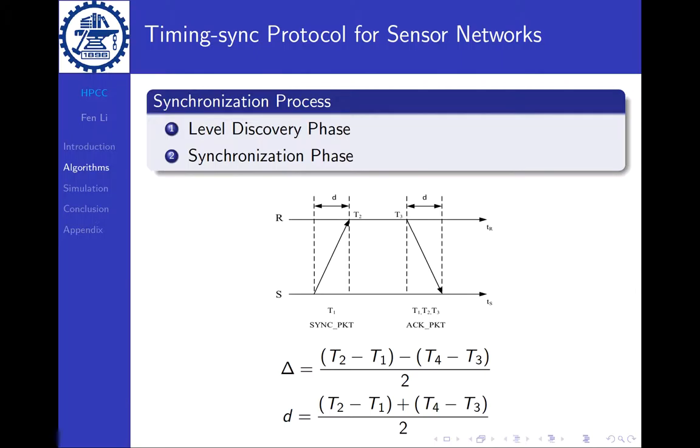Then R will send back an ACK packet to S at time T3, and node S will record the time T4. With the array of T1, T2, T3, and T4, the clock drift delta and the propagation delay d between node S and R can be estimated using the equations.